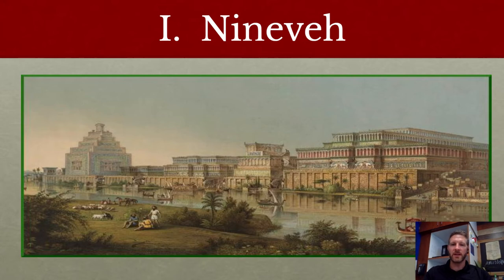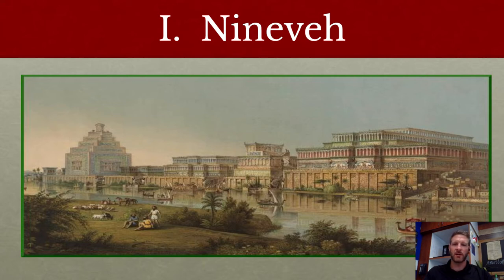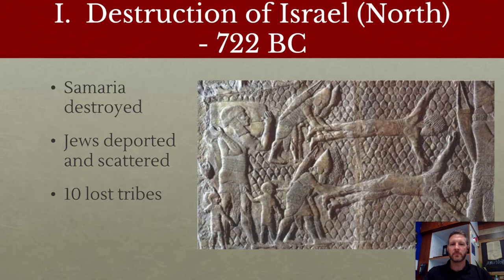Here are depictions of the capital of Nineveh along the banks of the river. You can see some similarities to the previous ziggurat structures of the Sumerians who came before them.